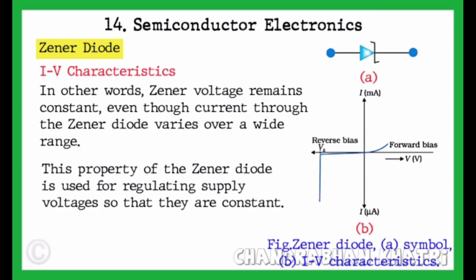In other words, Zener voltage remains constant even though current through the Zener Diode varies over a wide range. This property of the Zener Diode is used for regulating supply voltages so that they are constant.